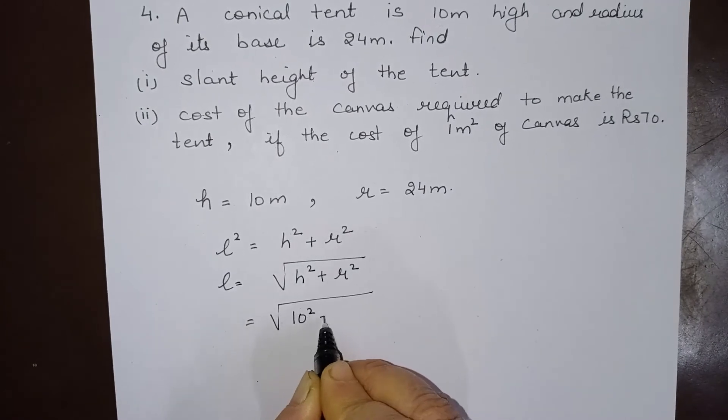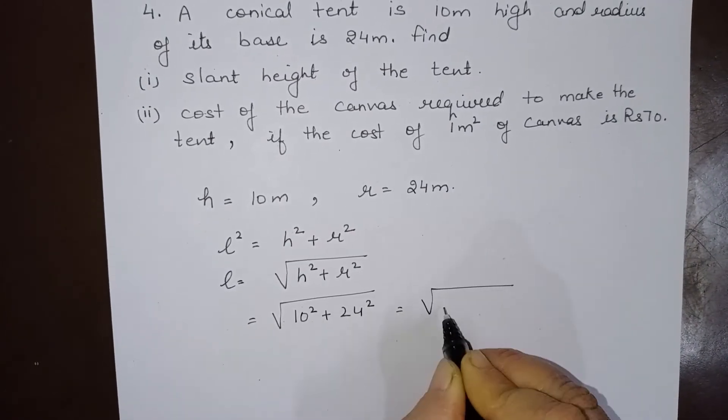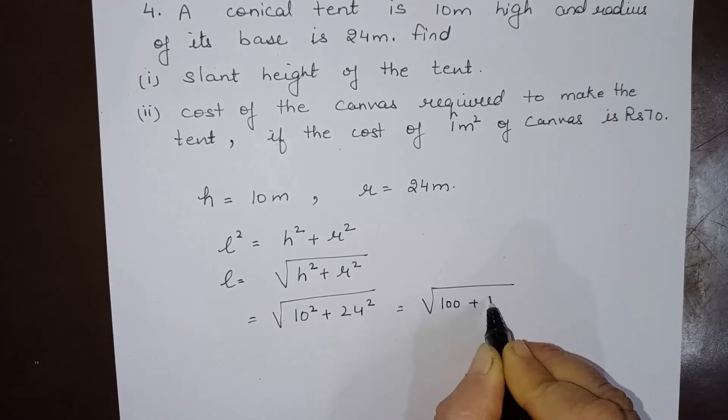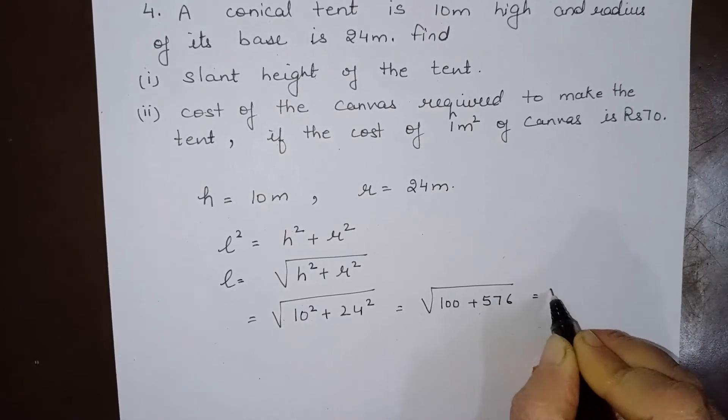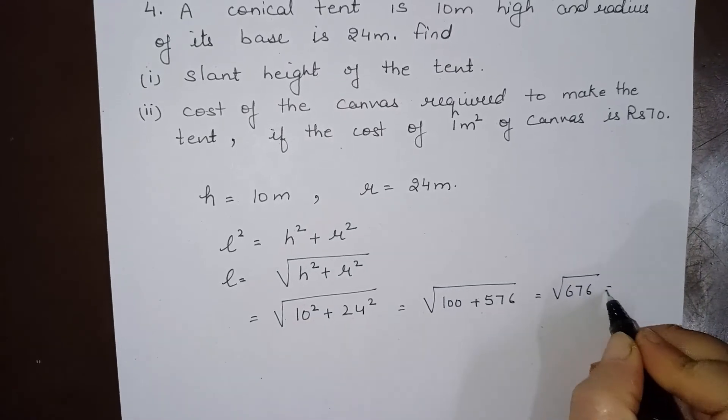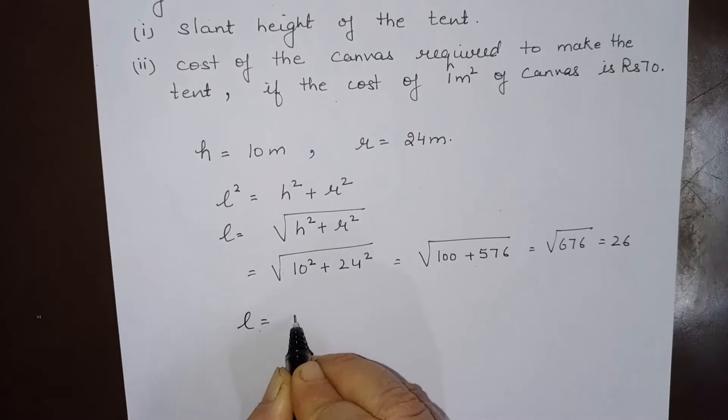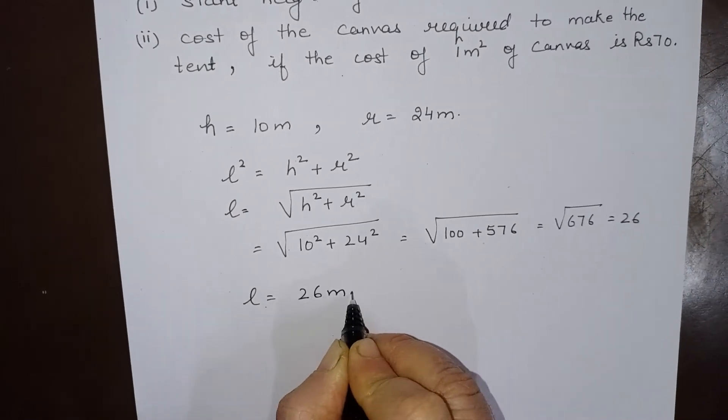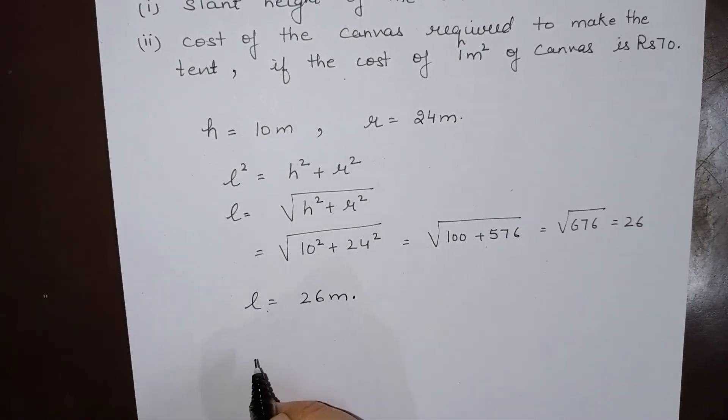of 10 square plus 24 square, square root of 100 plus 576 which is 676, so square root of 676 is 26. So l is 26 meters. This is the first part where we have to find the slant